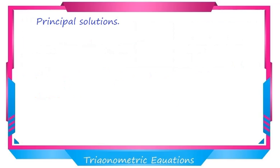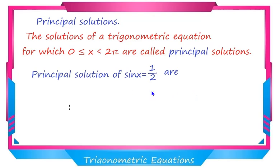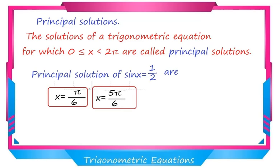Finally, remember this result about principal solutions. The solutions of a trigonometric equation for which 0 is less than or equal to x and x is less than 2 pi are called principal solutions. If the solution lies in this interval, it is called a principal solution. For sin x equal to 1 by 2, the principal solutions are x equal to pi by 6 and x equal to 5 pi by 6, since both lie between 0 and 2 pi.